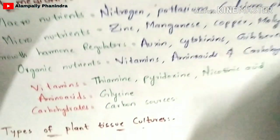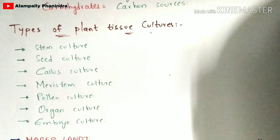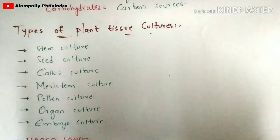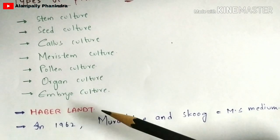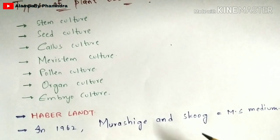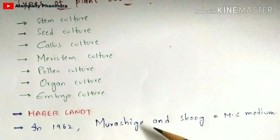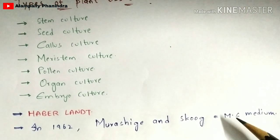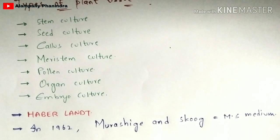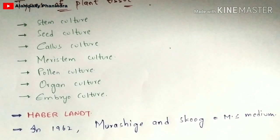There are different types of plant tissue cultures: stem culture, seed culture, callus culture, meristem culture, pollen culture, organ culture, and embryo culture. An important fact to remember is that Haberlandt is called the father of plant tissue culture. In 1962, Murashige and Skoog developed the MS medium — named after these two scientists. In a future video, I will explain how the MS medium is prepared.